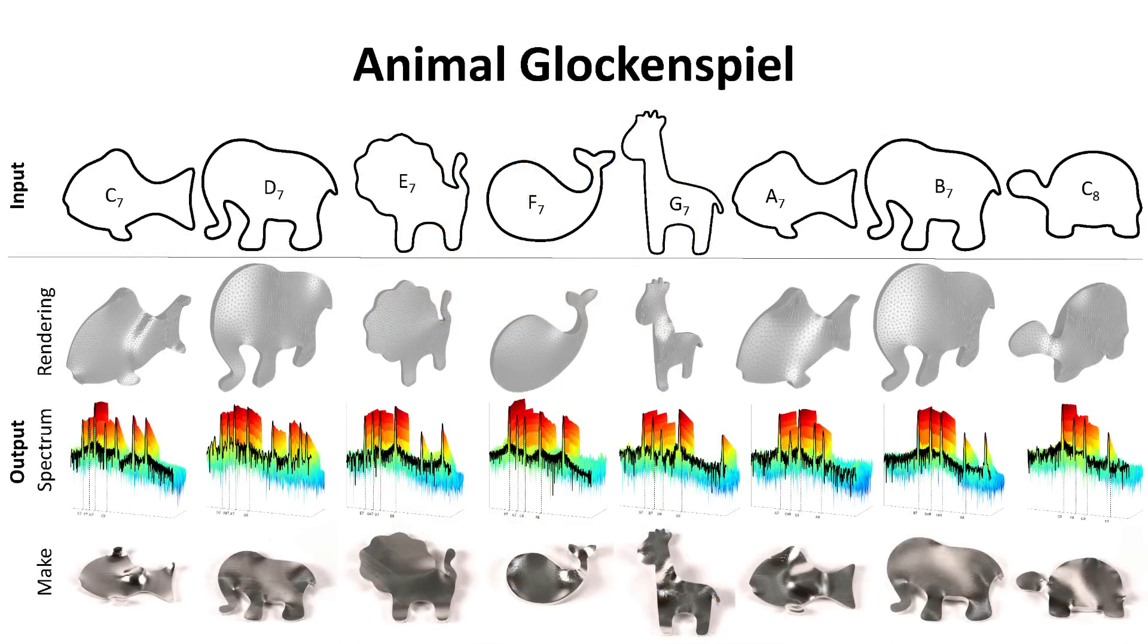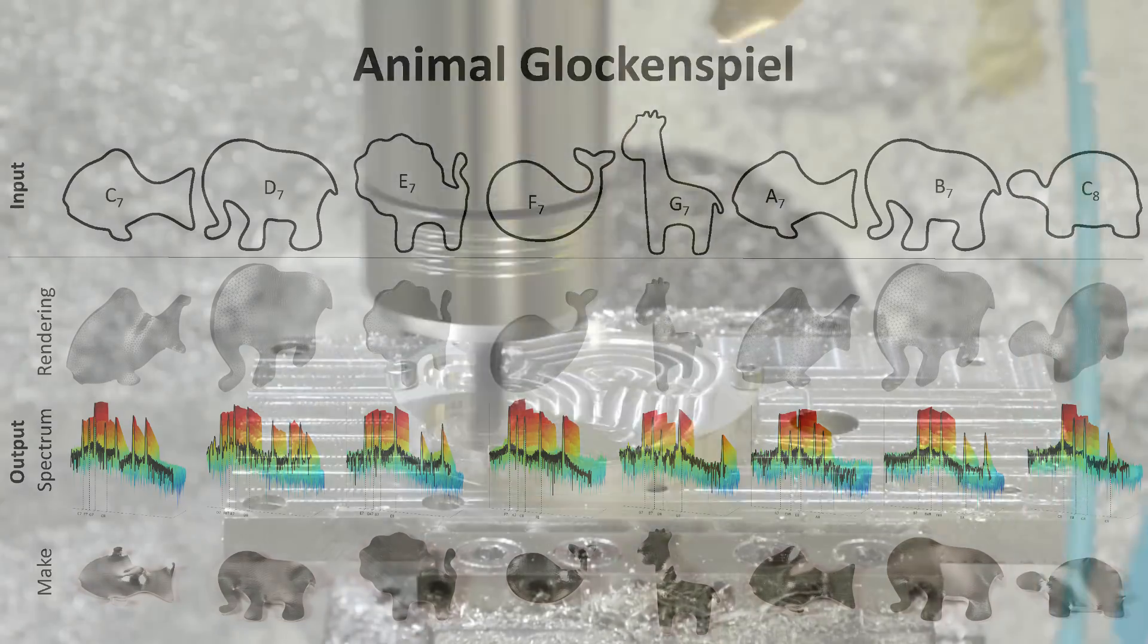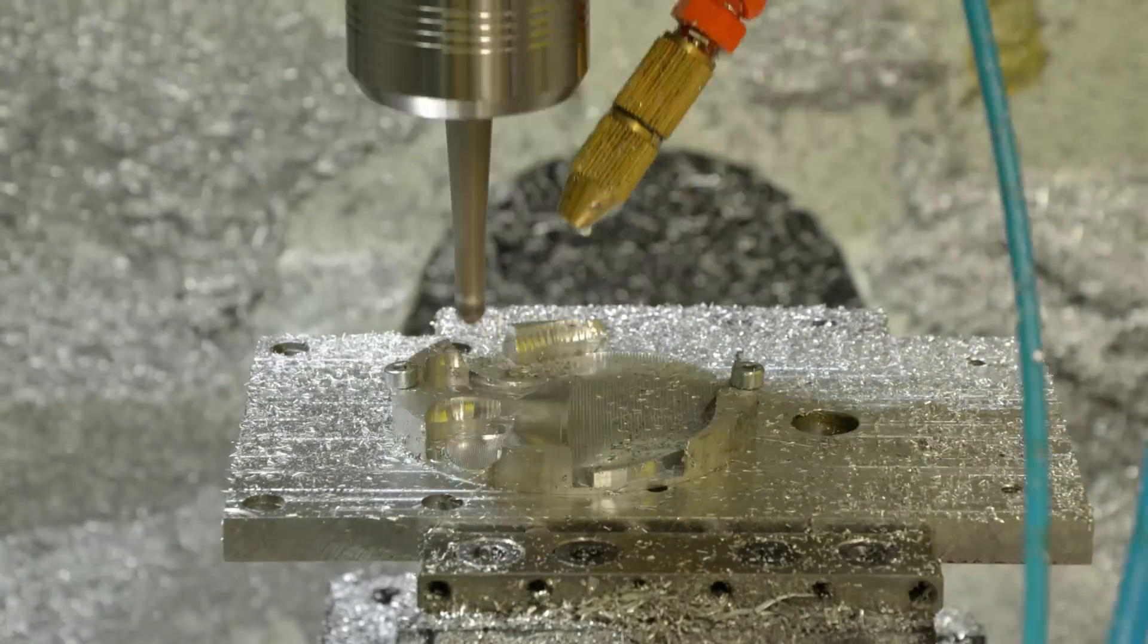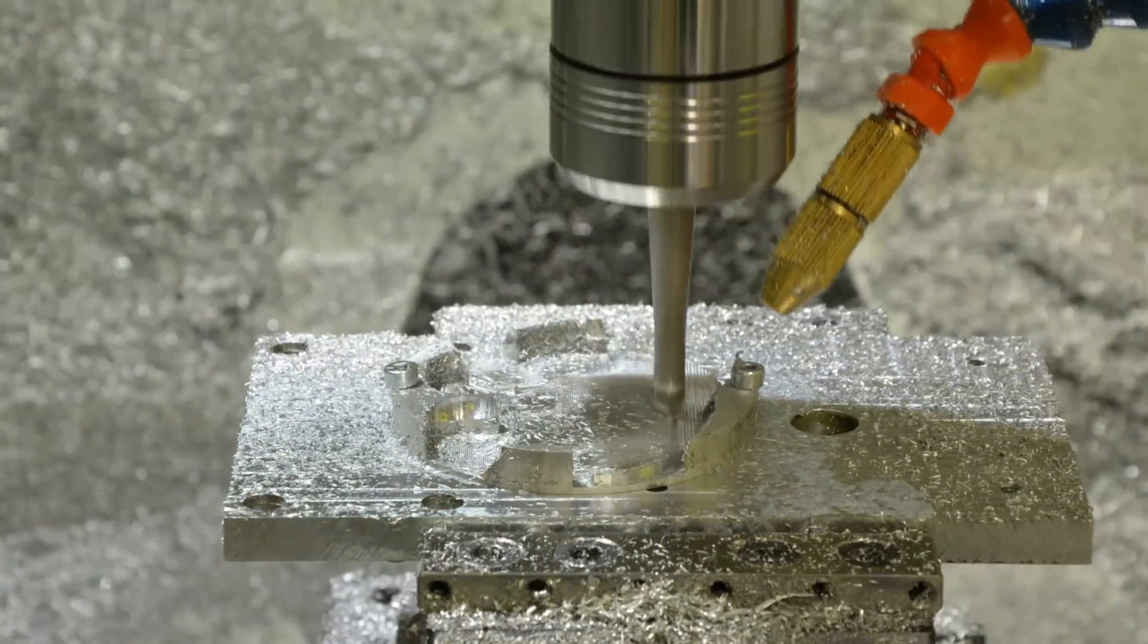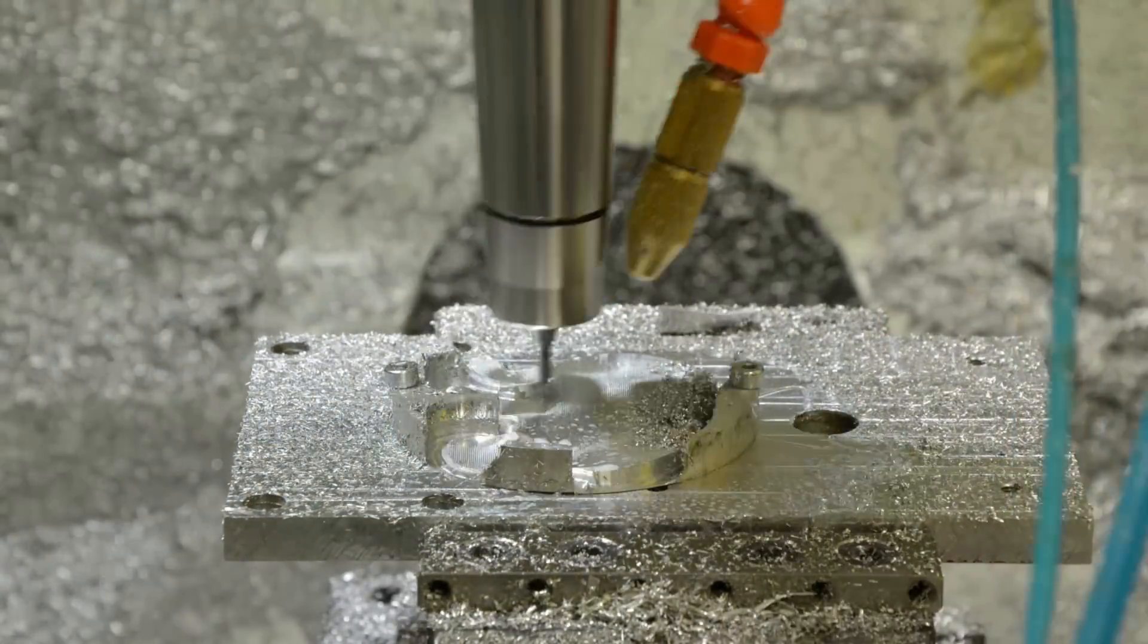To demonstrate the procedure, the researchers picked a number of animals, like a giraffe and a fish, and modified their thickness profiles to generate a particular sound spectrum. The result is a computer-optimized glockenspiel zoo.